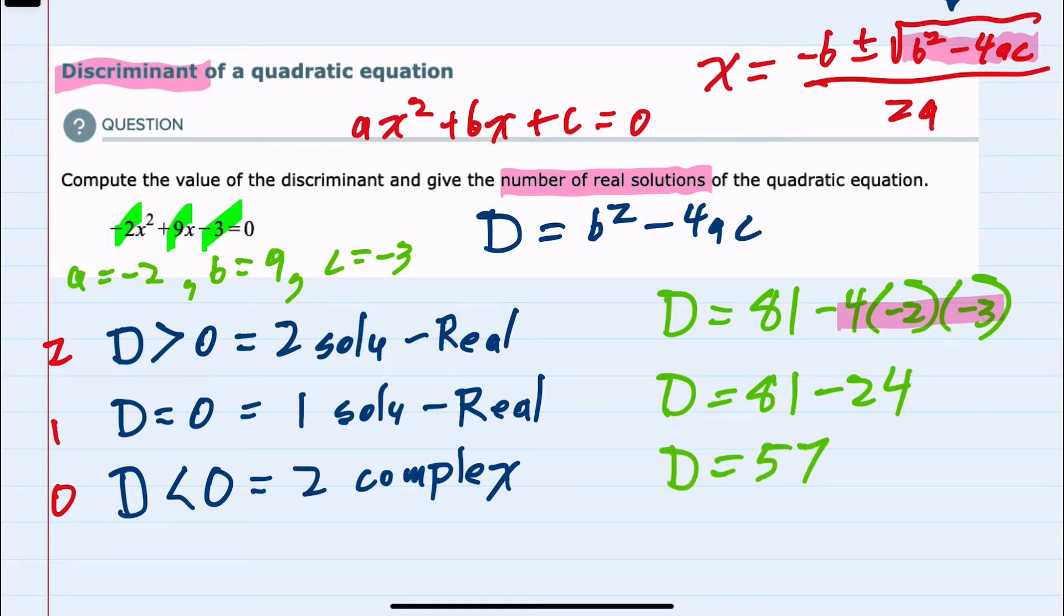And the important thing is that D is positive. We ended up with a positive number, so we will have two real solutions to this quadratic.